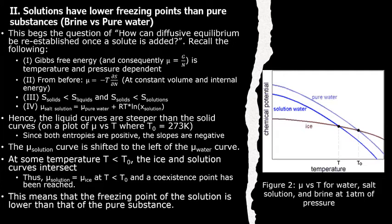Number one, Gibbs free energy and consequently chemical potential is temperature and pressure dependent. Number two, chemical potential is minus the partial derivative of entropy with respect to number of particles at constant volume and internal energy times temperature.